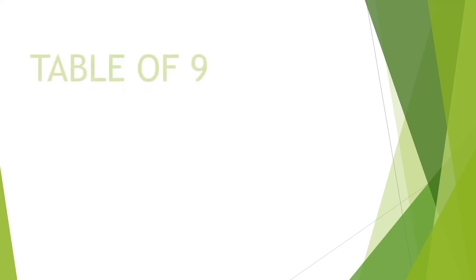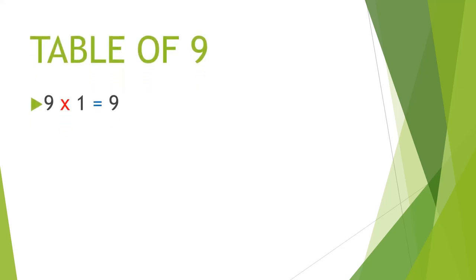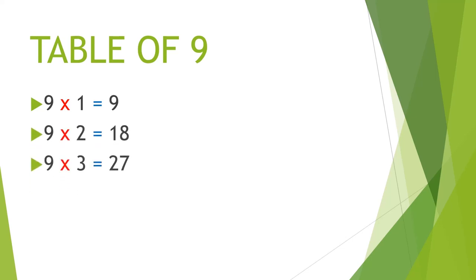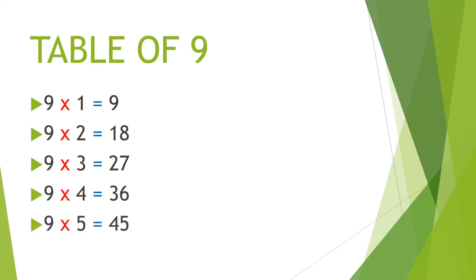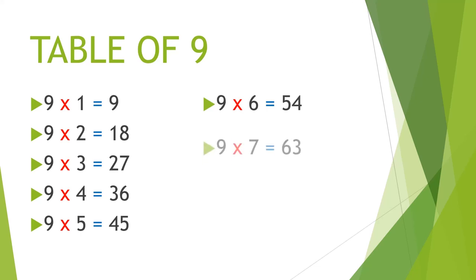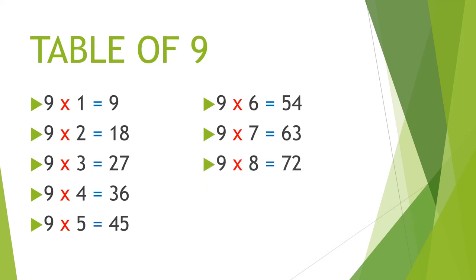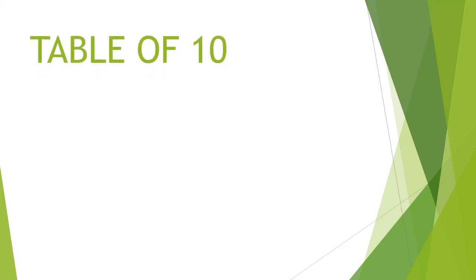Multiplication table of 9. 9 1's are 9, 9 2's are 18, 9 3's are 27, 9 4's are 36, 9 5's are 45, 9 6's are 54, 9 7's are 63, 9 8's are 72, 9 9's are 81, 9 10's are 90.